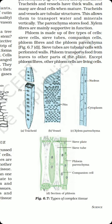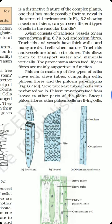Phloem consists of five kinds of elements: sieve cells, sieve tubes, companion cells, phloem fibers, and phloem parenchyma. Except for phloem fibers, all other phloem cells are living. Phloem fibers are dead in nature. Sieve tubes are tubular cells with perforated walls. Phloem transports food from leaves to all other parts of the plant.